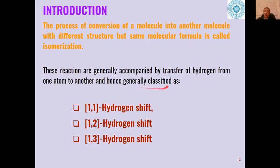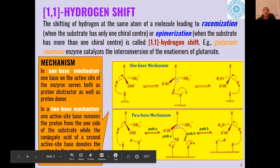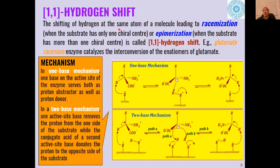This transfer of hydrogen can be of three types: 1-1 hydrogen shift, 1-2 hydrogen shift, or 1-3 hydrogen shift. The 1-1 hydrogen shift is the shifting of hydrogen at the same atom of the molecule, leading to racemization. When the substrate has only one chiral center, a racemic product is formed. It is called epimerization if the substrate has more than one chiral center.